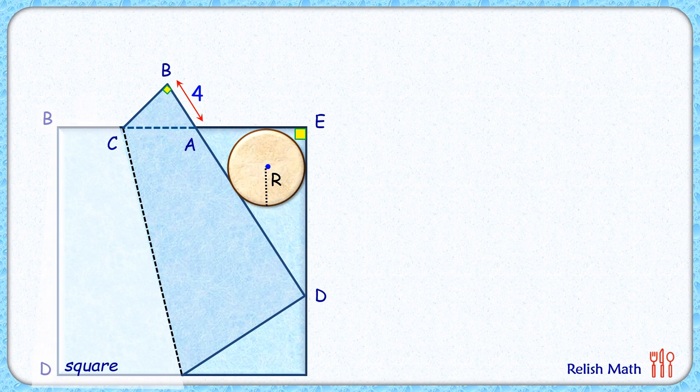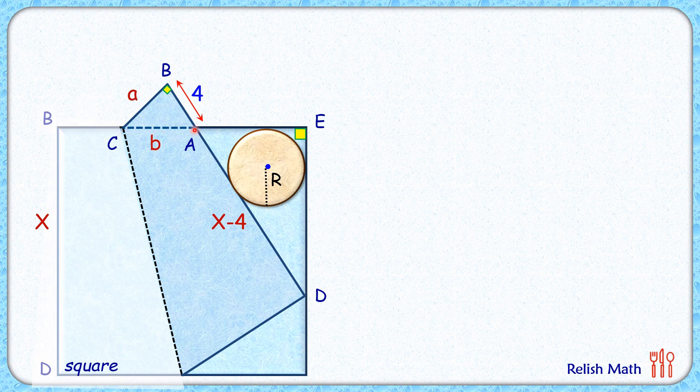Let's check the solution. We'll start by assuming BD as x centimeter. Now this full length BD is x, and thus AD will be x - 4. Let's assume BC is a centimeter, CA is b centimeter. Now here this length BC is a centimeter. Full length is x, and thus AE will be x - a - b centimeter.